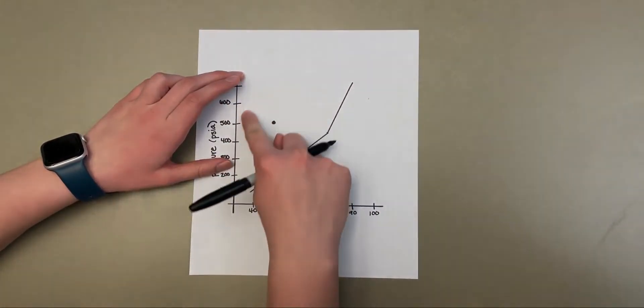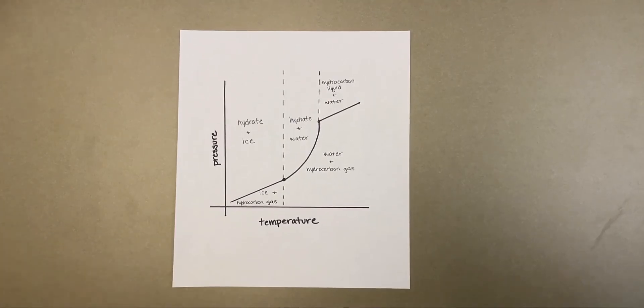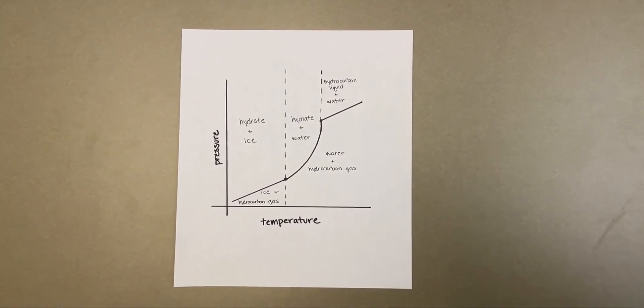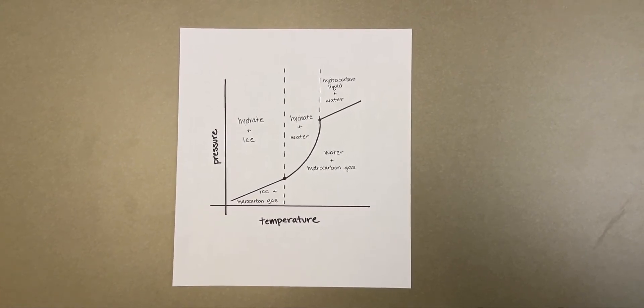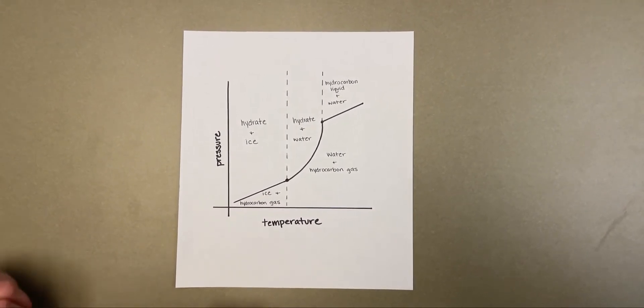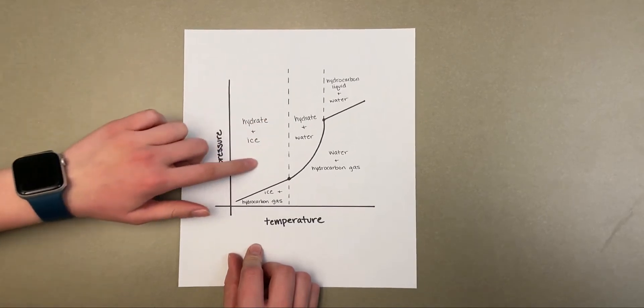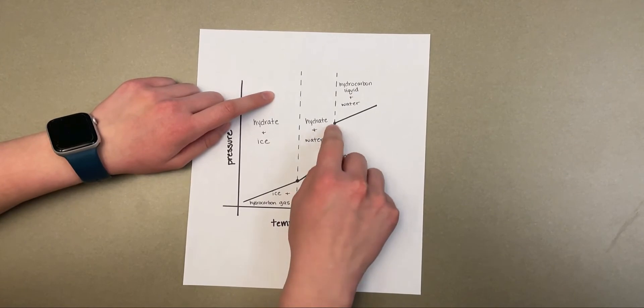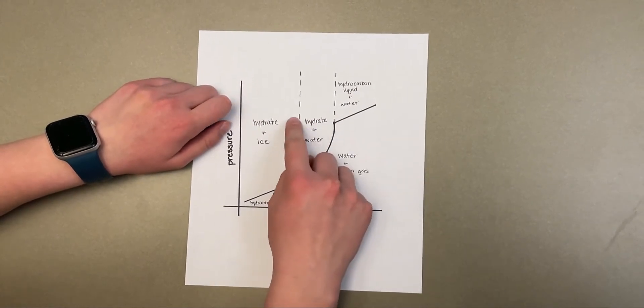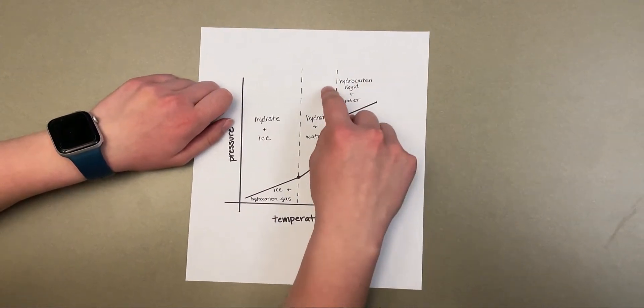This diagram shows the hydrate portion of a phase diagram for a mixture of water and a light hydrocarbon. As you can see, high pressure and low temperature move you into the hydrate and ice formation zone. As temperatures increase, hydrate and water are now present. And if we increase our temperature and pressures even more, we are now in the hydrocarbon liquid and water generation zone.